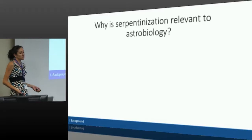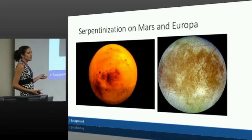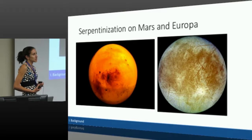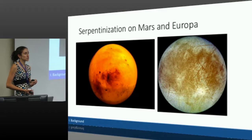How does this relate back to astrobiology? Mars we definitely know has olivine minerals on it, as well as serpentine minerals. So there's potential that these water-rock reactions could be occurring on Mars, making hydrogen gas, which is an electron donor for organisms to be utilizing.